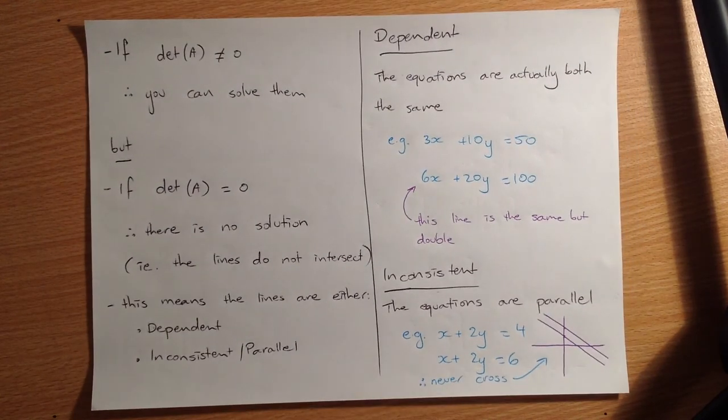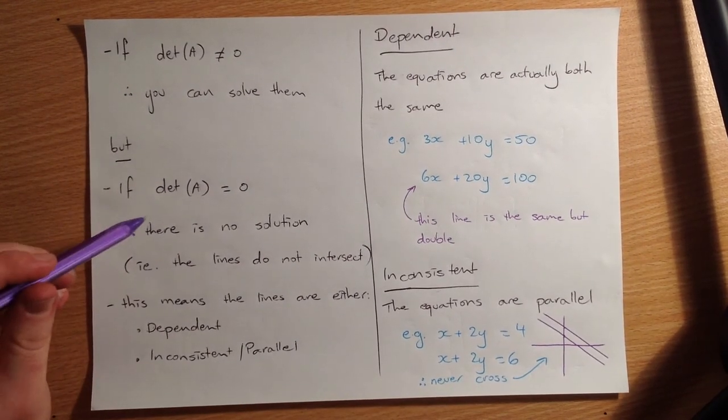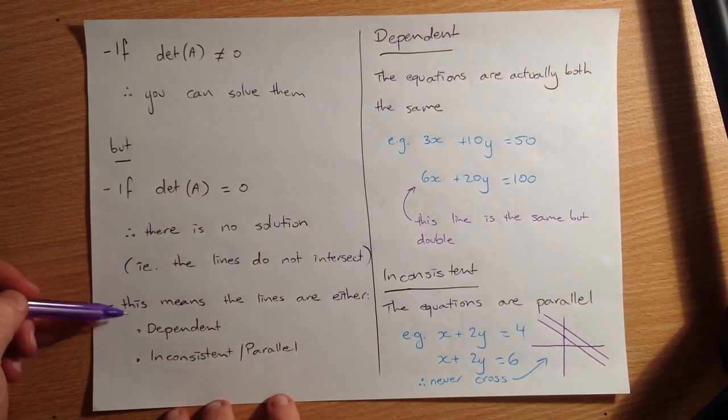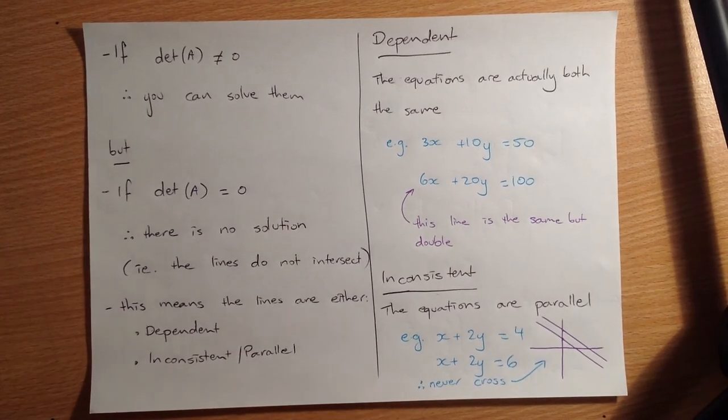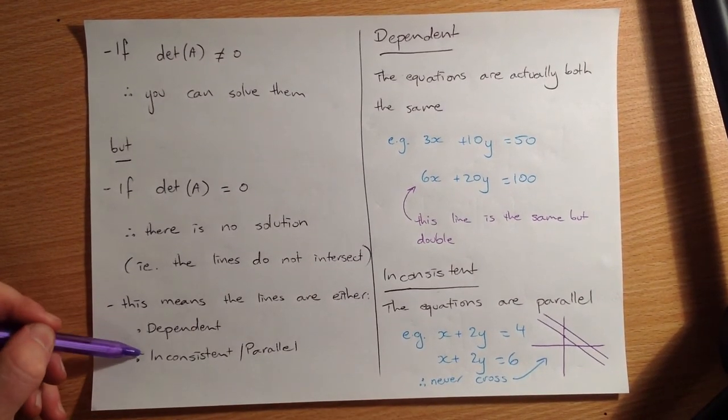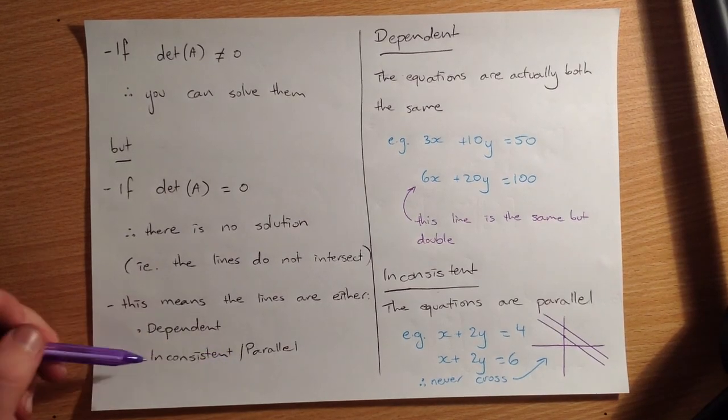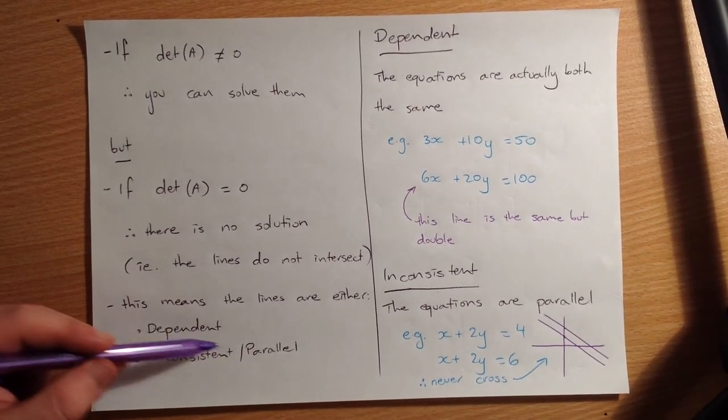Not really, but it will tell us something different. That tells us there's no solution. They definitely don't cross each other on a graph. So the lines do not intersect. I'll write that there for you. This means the lines are either one of two things, dependent or inconsistent. And often I call that parallel, but you might call it inconsistent. It doesn't matter, both are correct.